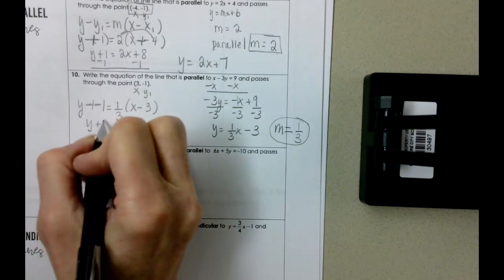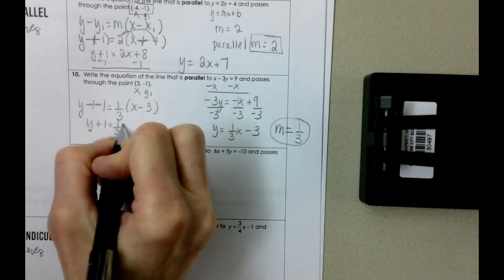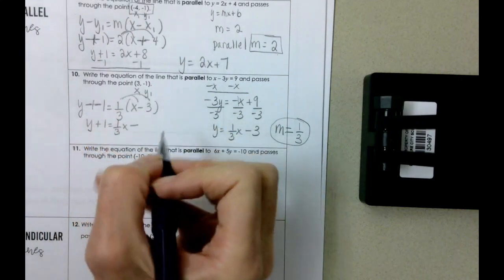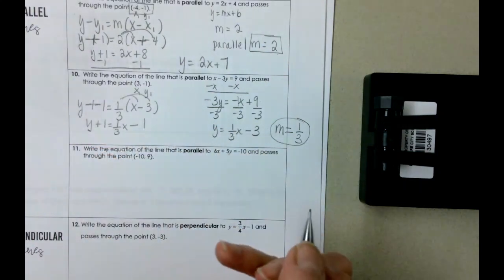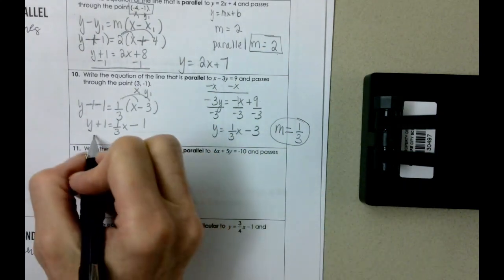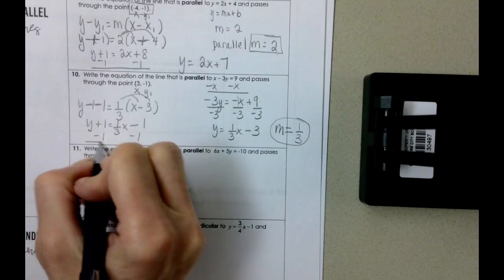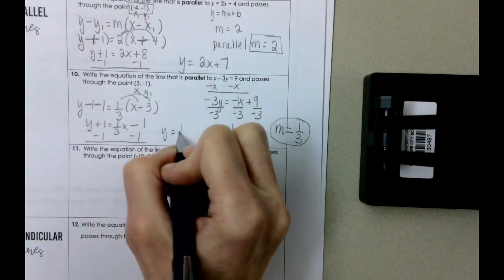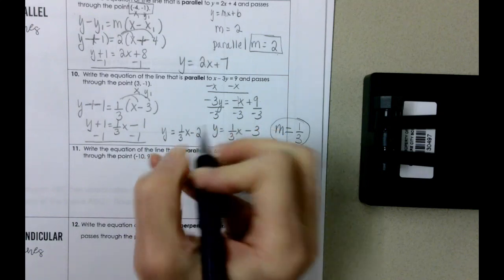So we have y plus 1 equals one third x when we distribute, and then one third times negative 3 is 1. So when we finish by subtracting 1 from both sides, we get our equation which is y equals one third x minus 2.